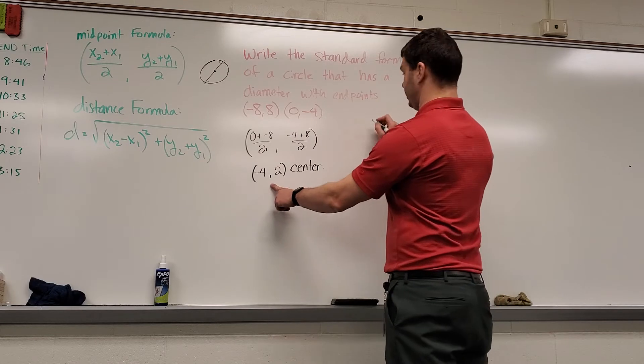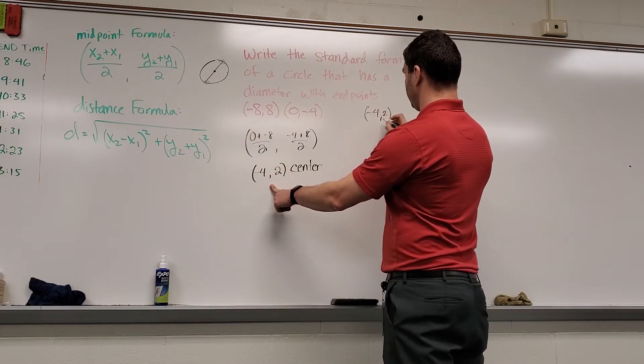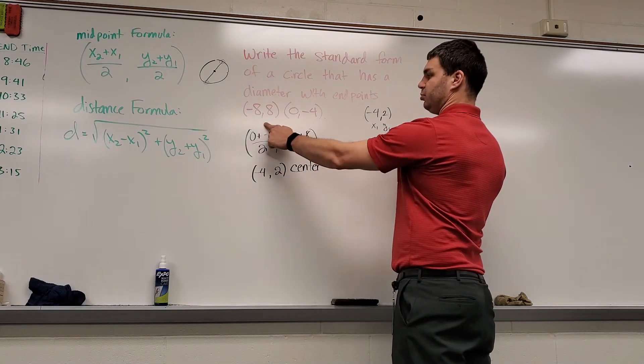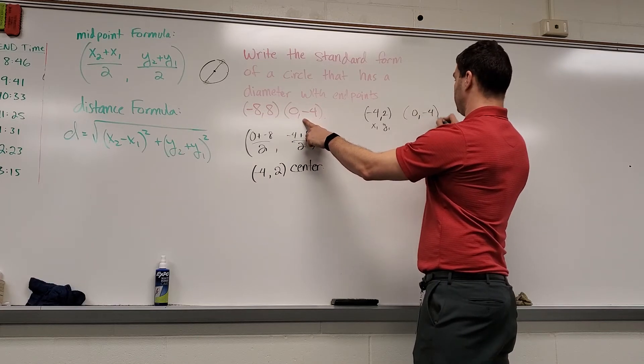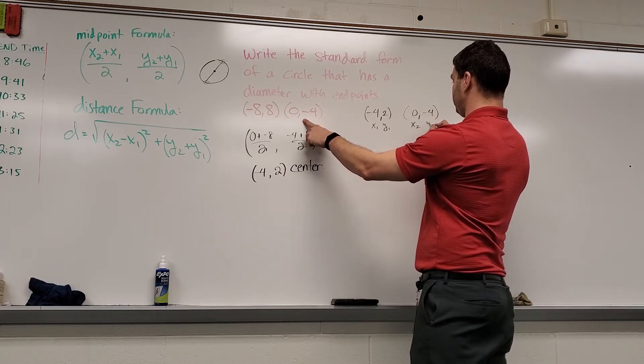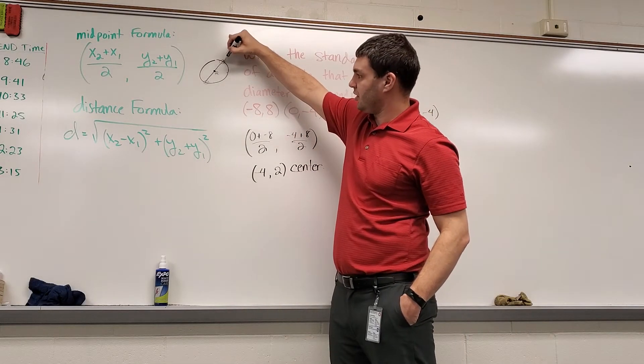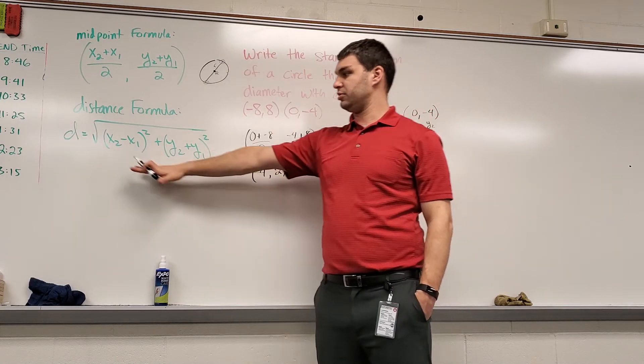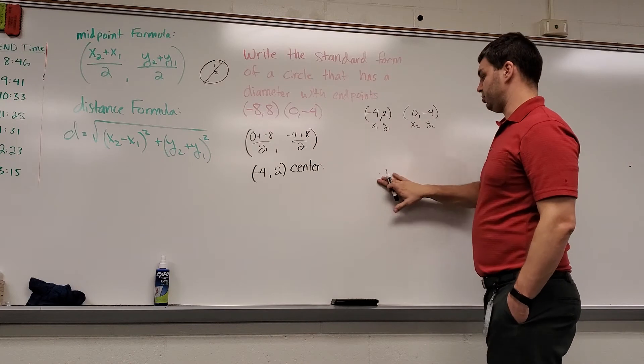And what I need to do with the center now is I'm going to take it and put it over here, negative 4, 2. And I'm going to call that my x1, y1. And I'm going to use one of my two endpoints. It's going to be my x2, y2. Because now if I have the center, the center to one of those endpoints is going to be the radius r. So I have to use the distance formula to find that distance using these two points here.